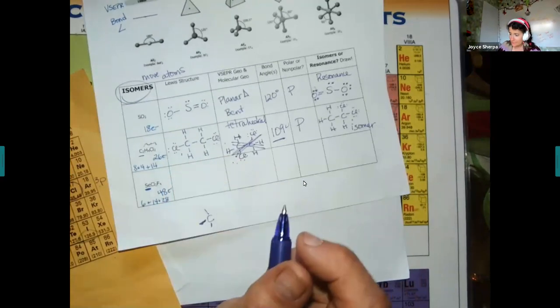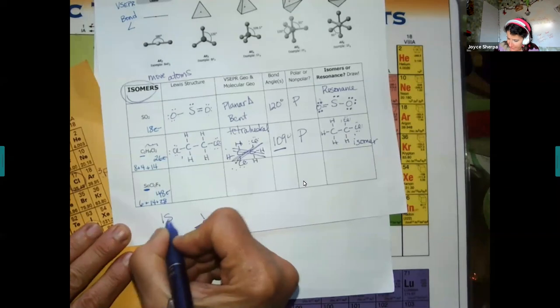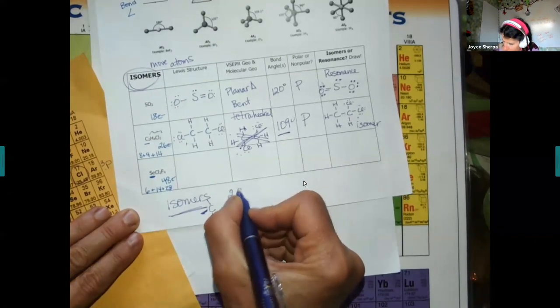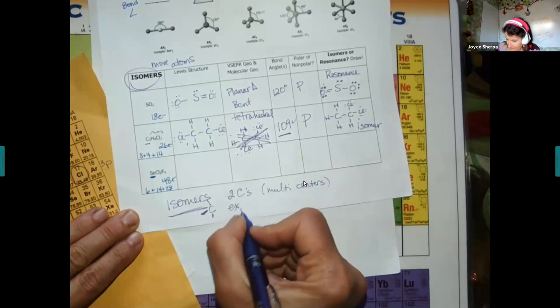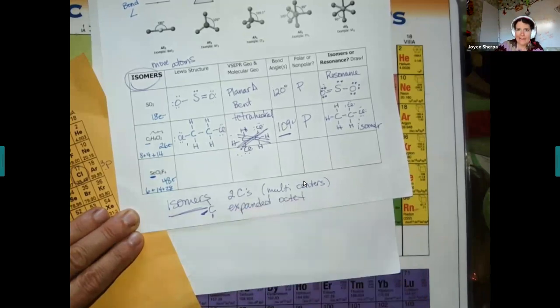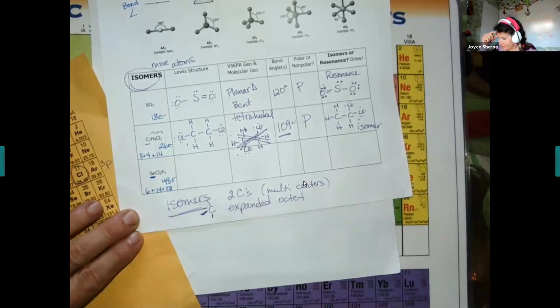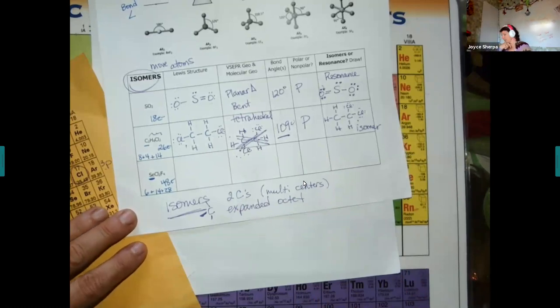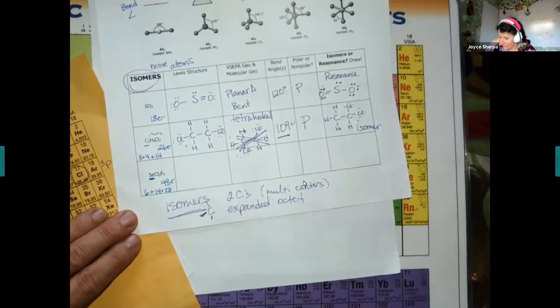Isomers happen in two situations: either when you have two carbons — multiple centers — or when you have an expanded octet. It's easier to see with the model, but I can't find that bag of atoms right now.